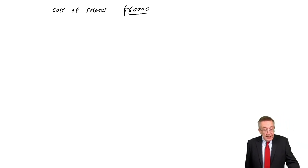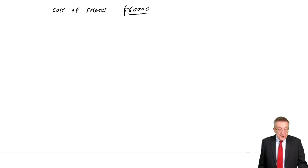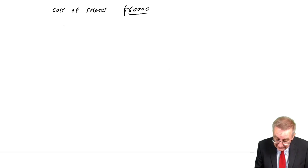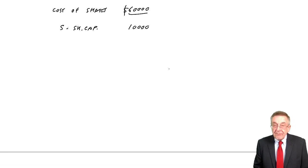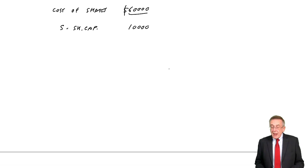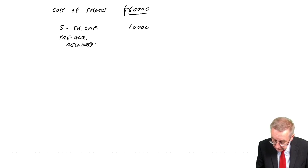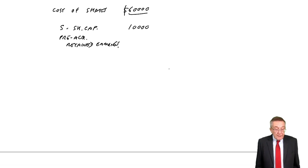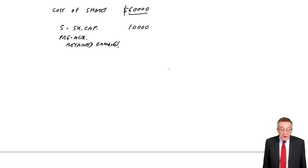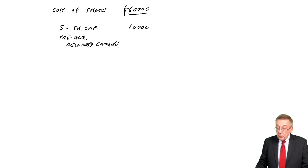What were they paying for? They bought 100% of the shares, and the share capital of S was £10,000. They were also paying effectively for the retained earnings at the date they bought the shares — the pre-acquisition retained earnings. Look at the second sentence at the top of the question: they bought the shares on the 1st of January 2005, and on that date the retained earnings of S were £15,000.